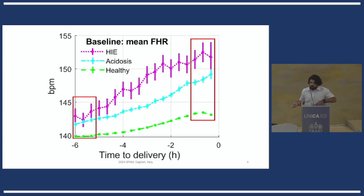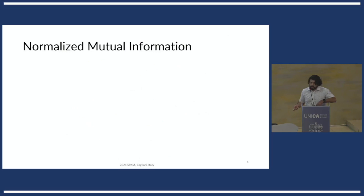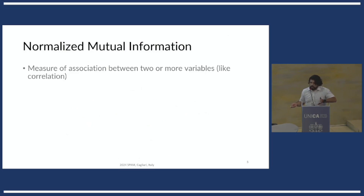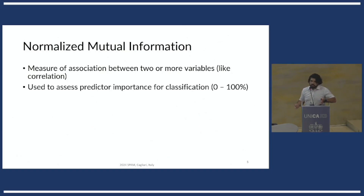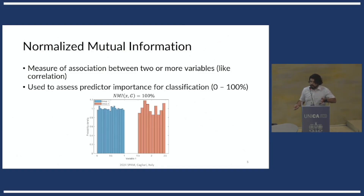But first, I'm just going to introduce very briefly what is the normalized mutual information. It's a measure of association between two variables — similar to Pearson's correlation, but it also measures nonlinear association. It is used in machine learning studies to assess predictor importance, so if there's high association, we can say this predictor is very important for classification.